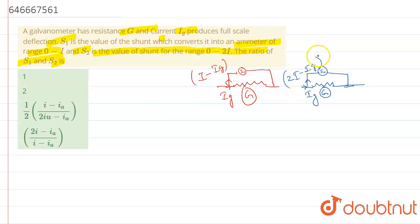Now you will see that writing the equation, first you will get that IG multiplied by G